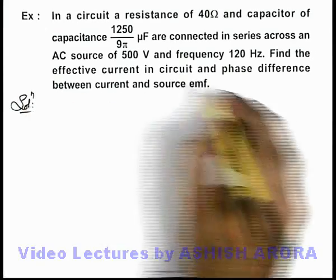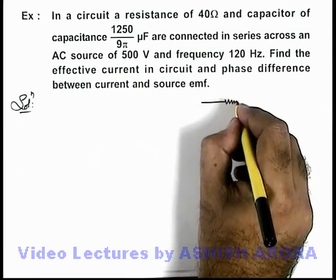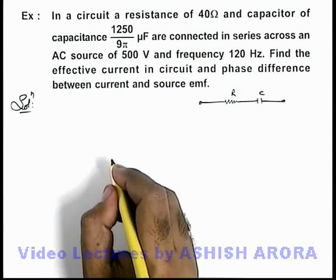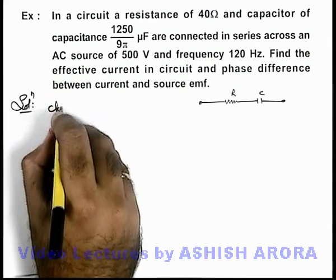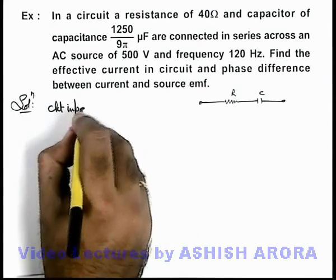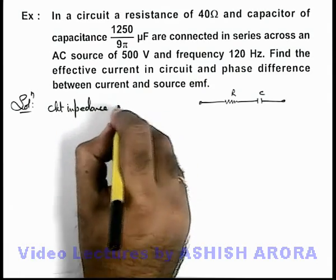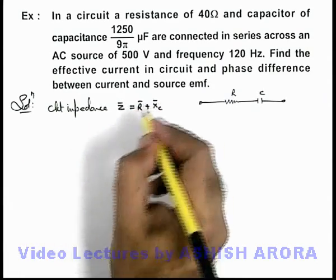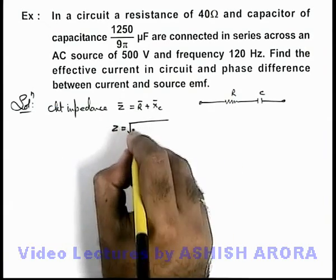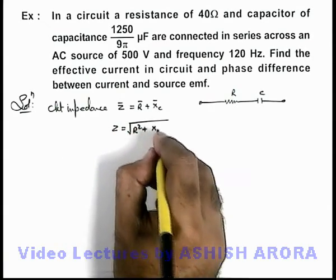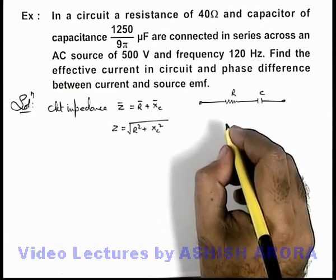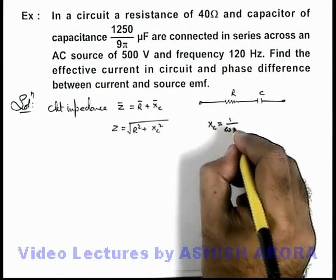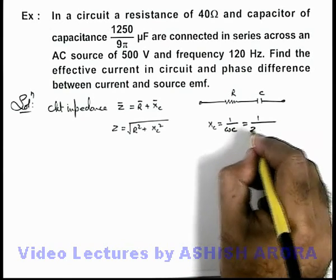In this situation, a resistance and a capacitor are connected in series. The circuit impedance can be directly written in phasor form as R phasor plus Xc phasor, which can be written in magnitude as √(R² + Xc²). The value of capacitive reactance Xc is given as 1 by ωC, which is 1 by 2πfC.